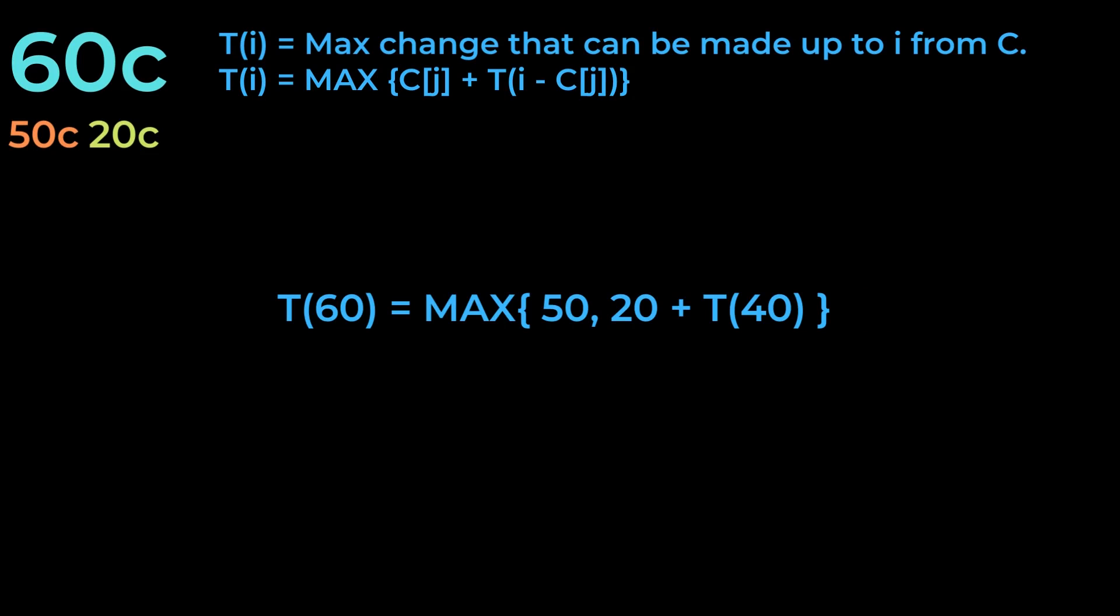With 20 cents, we're going to be able to make 20, plus however much change we can make with 40. Unlike at t of 10, at t of 40, we can similarly take 20, as well as however much change we can make at t of 20, which of course is also 20. This means that t of 40 becomes 40, and t of 60 will become 60, giving us the optimal value.